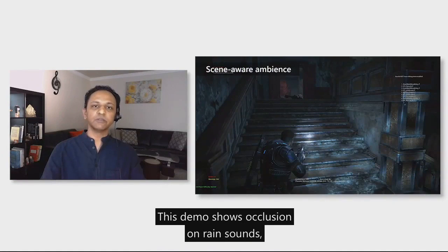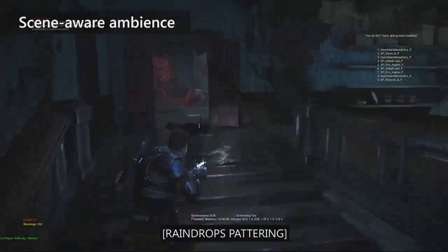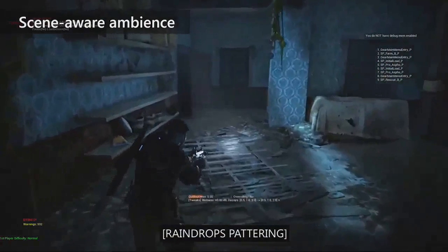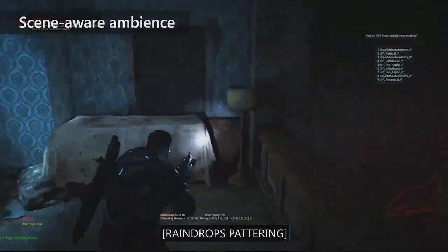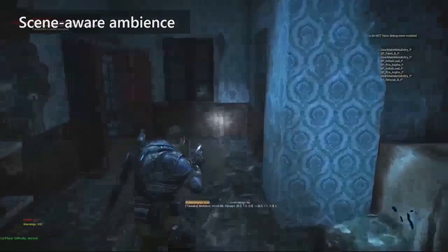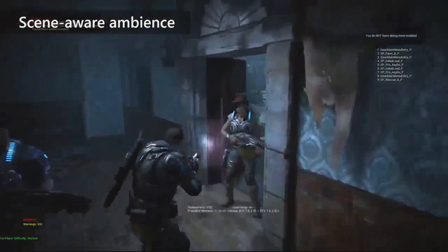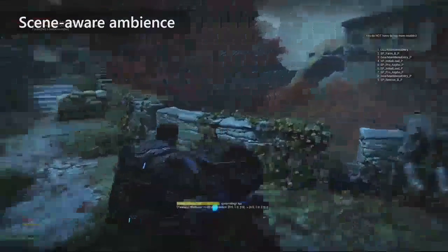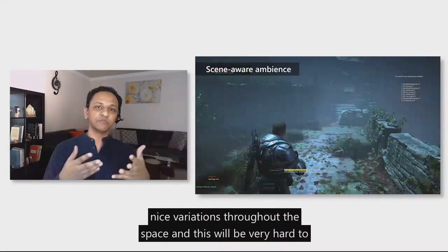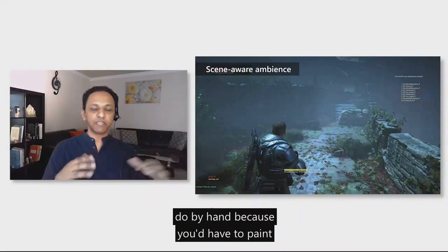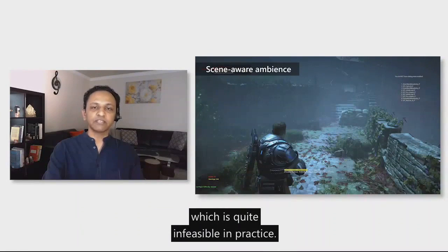This demo shows occlusion on rain sounds and how they vary naturally throughout the space. You get these smooth, nice variations throughout the space. This would be very hard to do by hand, because you'd have to paint a loudness map through the scene saying how loud the rain should be everywhere, which is quite infeasible in practice.